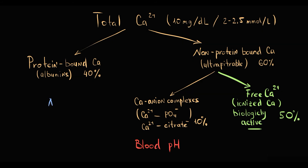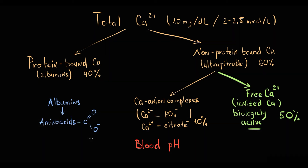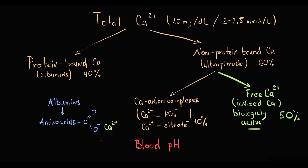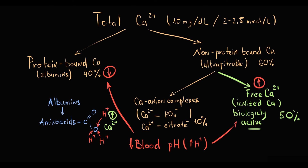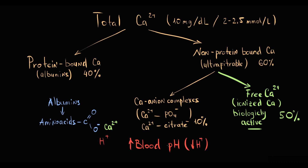Another factor is blood pH. Albumins consist of amino acids, and amino acids have carboxyl groups with negative charge, so they can bind positively charged substances such as hydrogen ions or calcium. If blood pH becomes more acidic, the amount of hydrogen ions increases, raising the chance that albumin will bind hydrogen ions instead of ionized calcium — resulting in increased ionized calcium. But if pH increases, decreasing hydrogen ion concentration causes albumins to bind more ionized calcium, resulting in decreased ionized calcium concentration. These are the major clinical factors that affect calcium level in the blood.